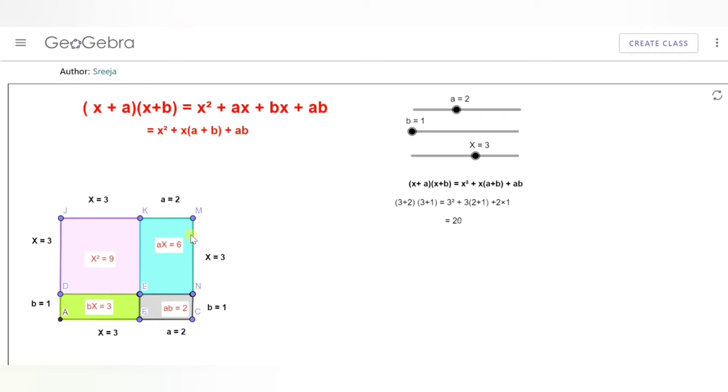Now to get the area of the outer rectangle I will have to sum up these areas which is x² + ax + bx + ab.